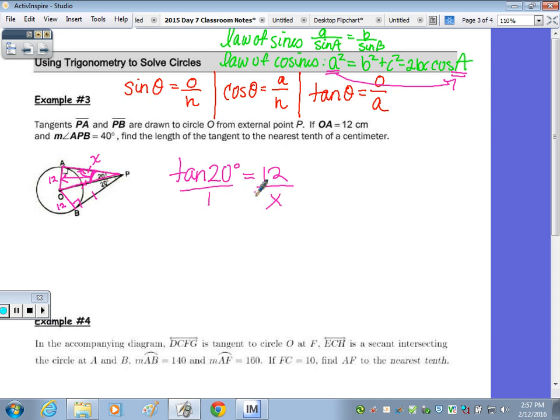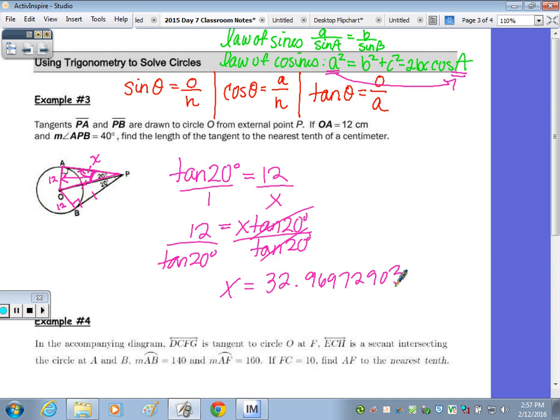So, tangent of 20 equals opposite over adjacent. Put this over 1 and cross multiply. 1 times 12 is 12 equals X tangent of 20. Divide by tangent of 20. And X equals 32.96972903. Round it to the nearest tenth. The length of the tangent is approximately 33.0 because they said to the tenth centimeters.